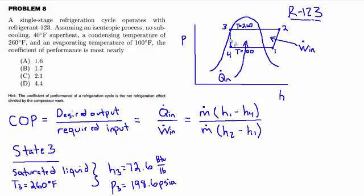So h3 equals 72.6. I'm also going to jot down the pressure: p3 = 198.6 psia. I'm recording that because when we get to state 2, it might be helpful to have the pressure as another data point. Why did we go after h3 when it's not one of the ones needed for the formula? After the expansion process from state 3 to state 4, that's a constant enthalpy process, so h4 equals h3.